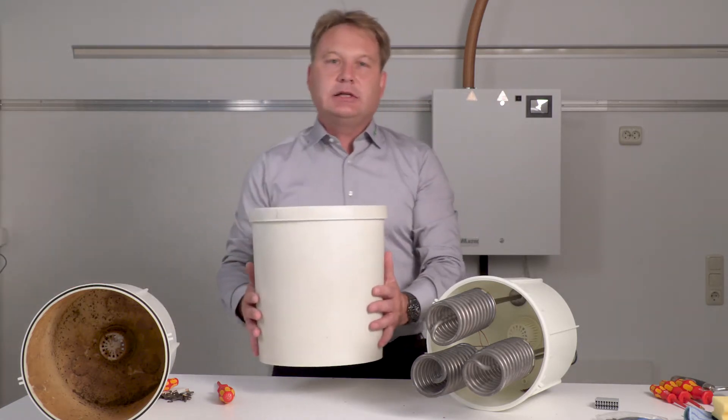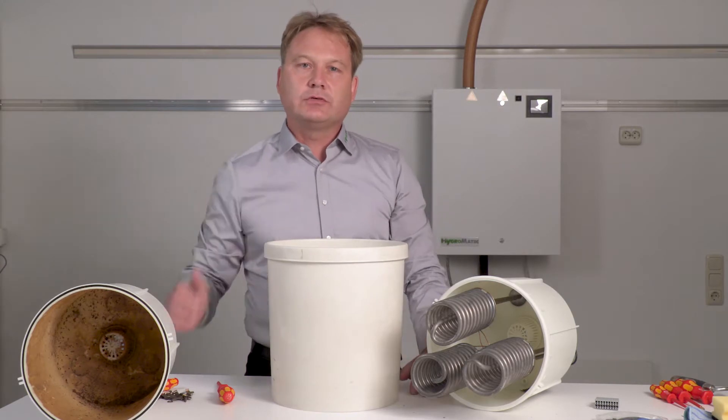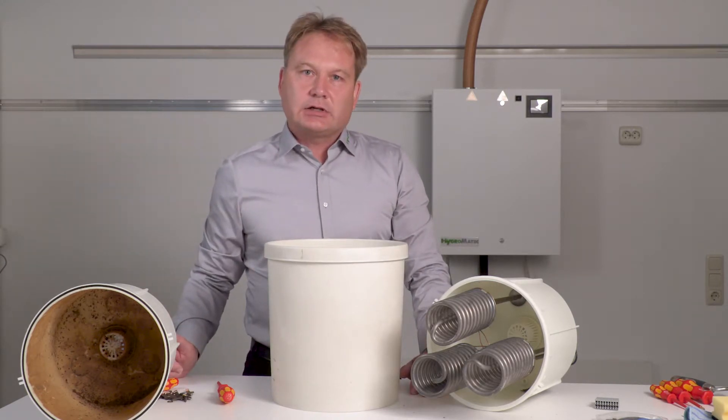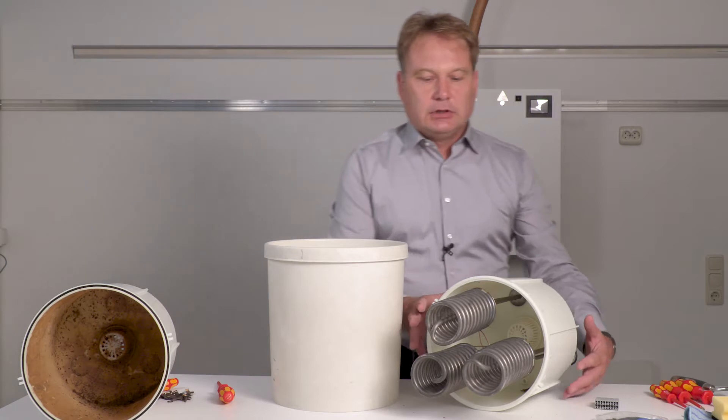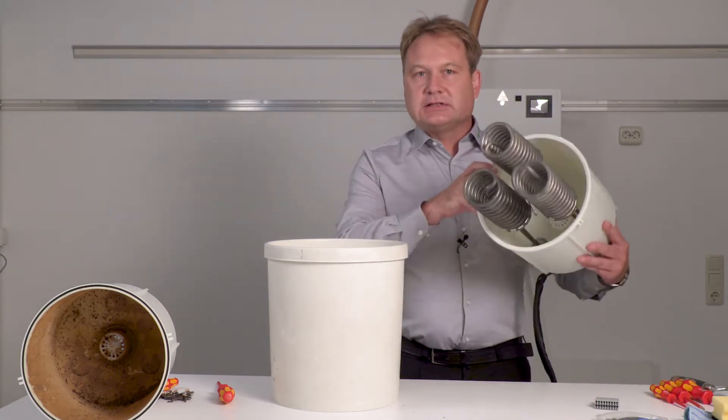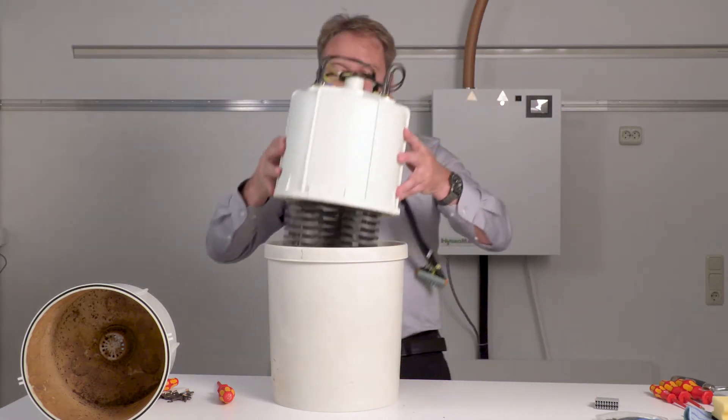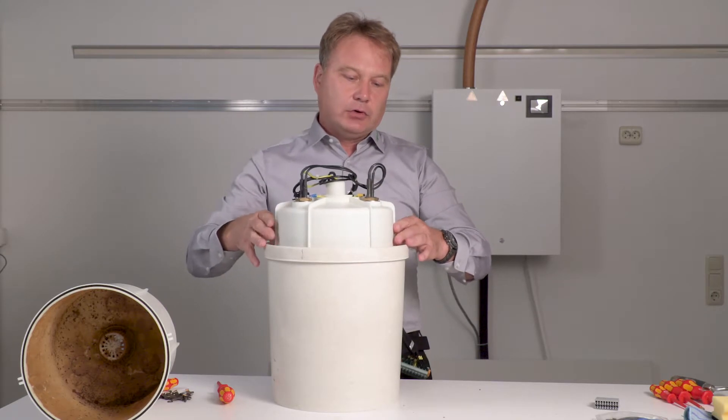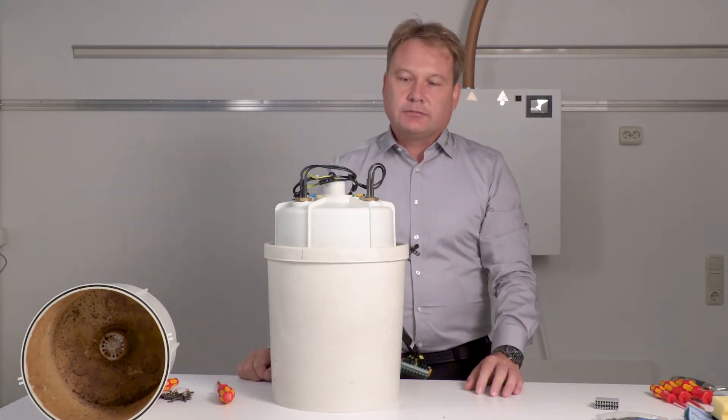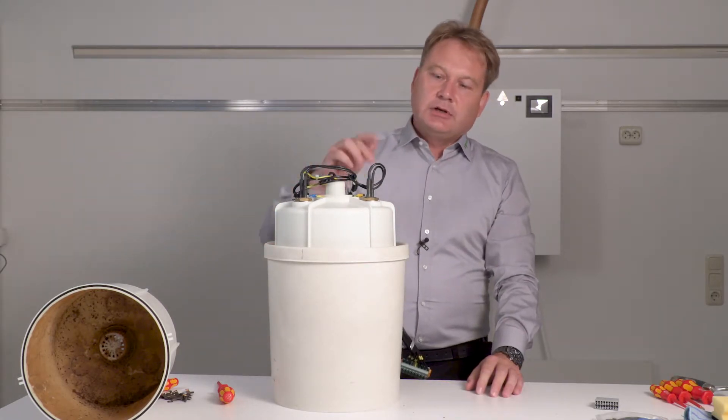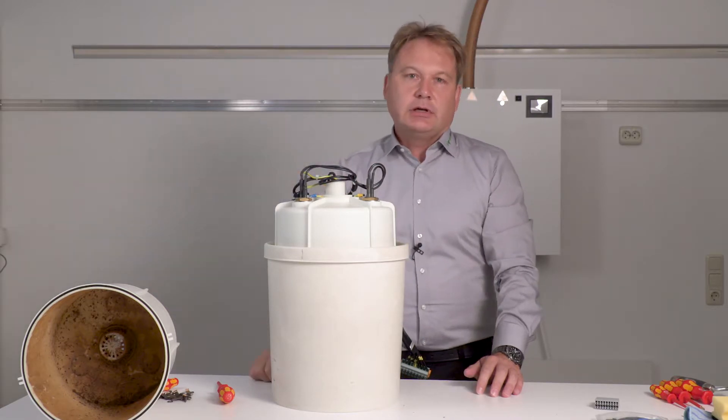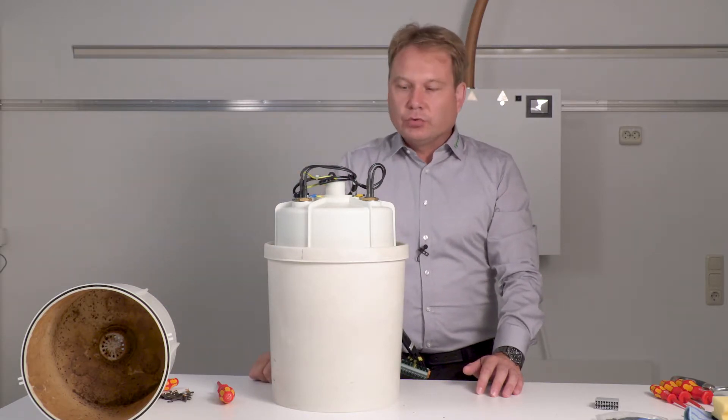You can take a container, mix your citric acid or descaling agent here, and place the upper half of the steam cylinder into it and let it descale. Please make sure that the connectors from the heater element do not come into contact with water or acid.